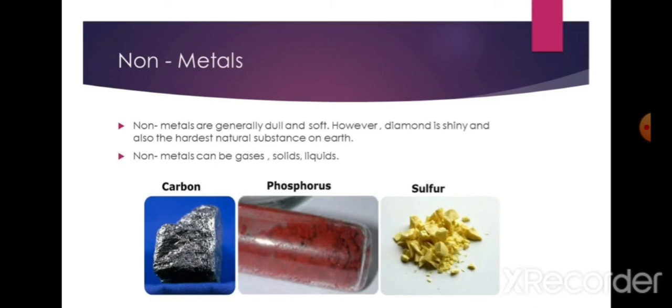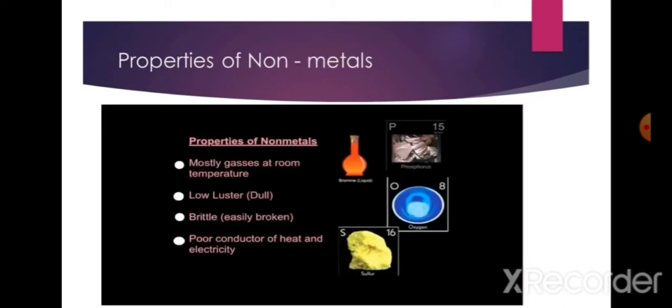Some examples of non-metals shown in the picture include carbon, phosphorus, and sulfur. Properties of non-metals: mostly they are gases at room temperature, they have low luster and look dull, they are brittle and easily broken, and they are poor conductors of heat and electricity — except graphite, which is a good conductor of electricity.